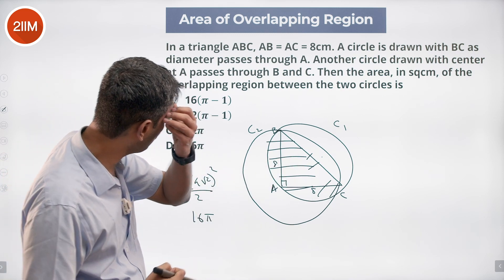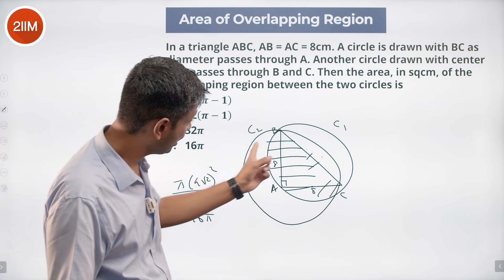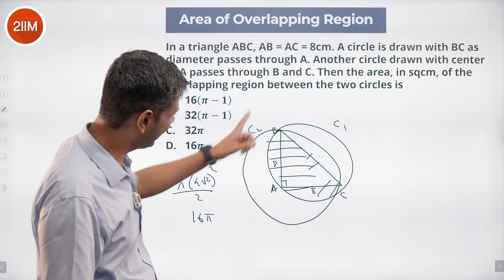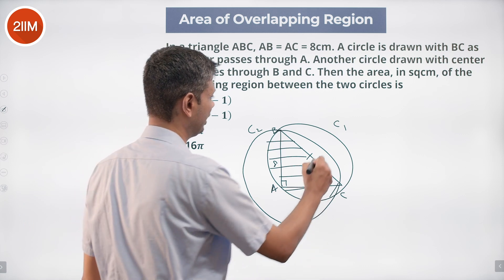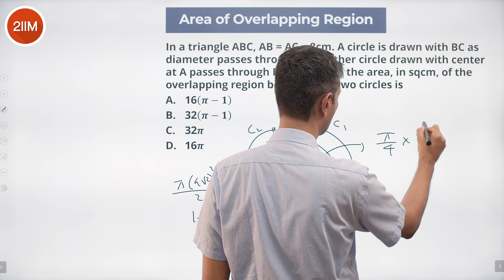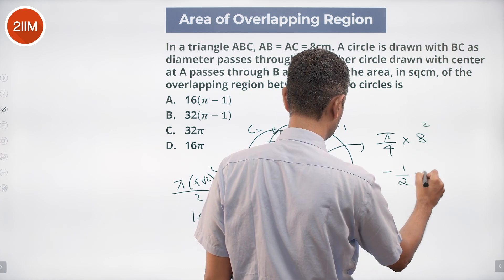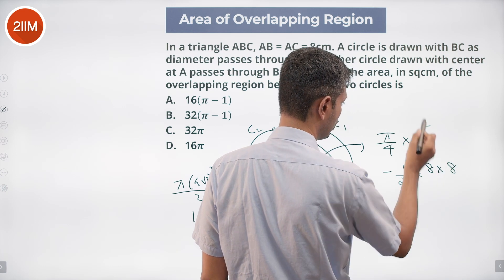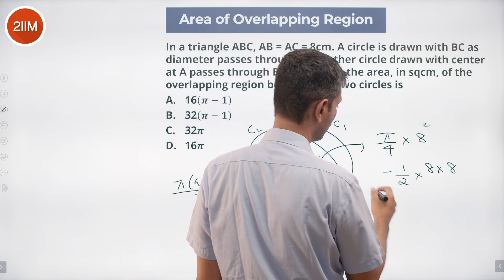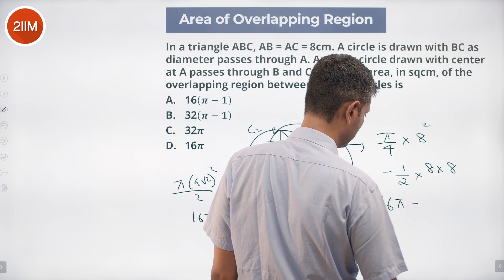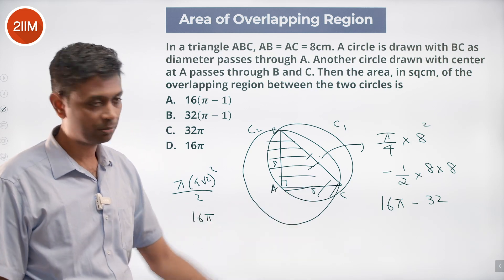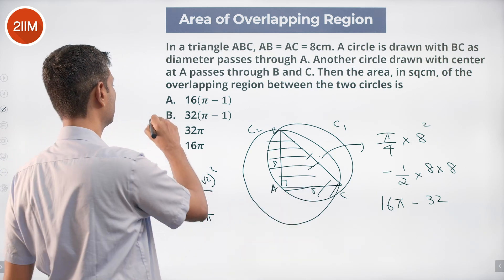Now we need to find the area of the segment in the bigger circle, circle 2. Area of segment equals area of sector minus area of triangle. Area of sector is (1/4)πr² = (π/4) × 64 = 16π. Minus half × 8 × 8 = 32. So the segment area is 16π − 32. Adding to the semicircle: 16π + (16π − 32) = 32π − 32, which equals 32(π − 1).